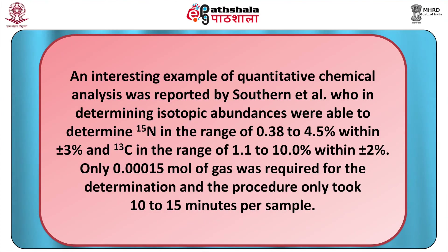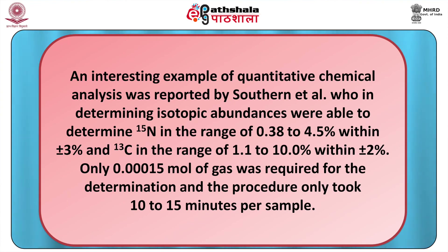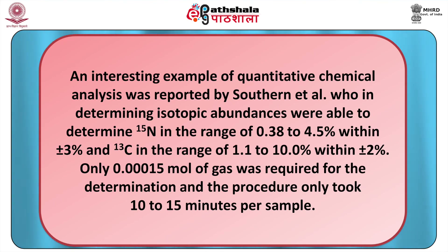Microwave spectroscopy is also successful in determining isotope abundance, because each molecule possesses a unique moment of inertia depending on the particular nuclei present. An interesting example was reported by Surdan et al., who determined nitrogen-15 in the range of 0.38 to 4.5% within ±3%, and carbon-13 in the range of 1.1 to 10% within ±2%. Only 0.00015 mole of gas was required and the procedure took only 10 to 15 minutes per sample.